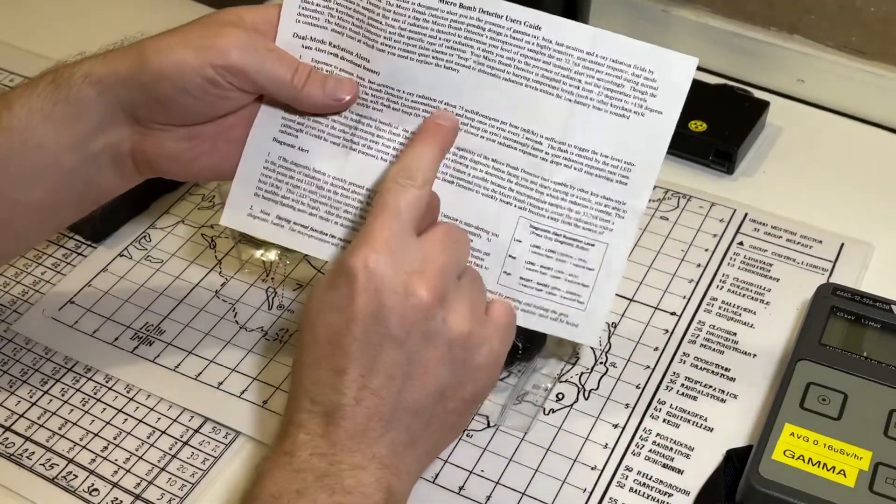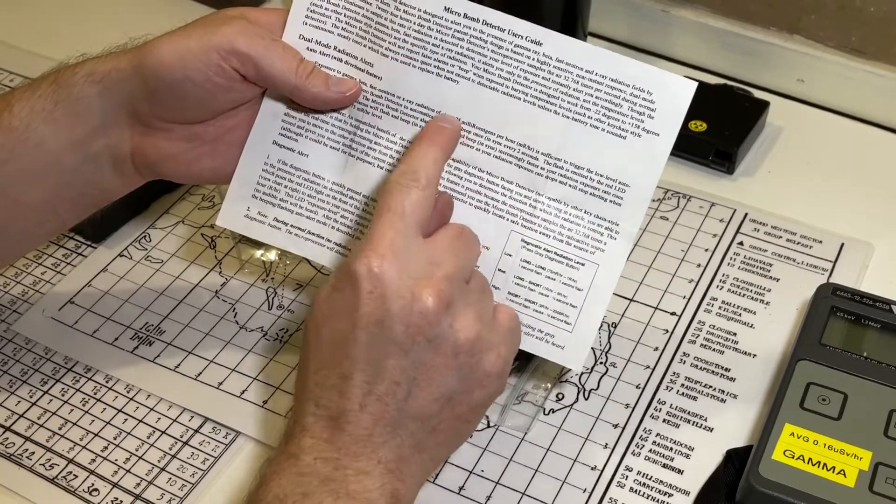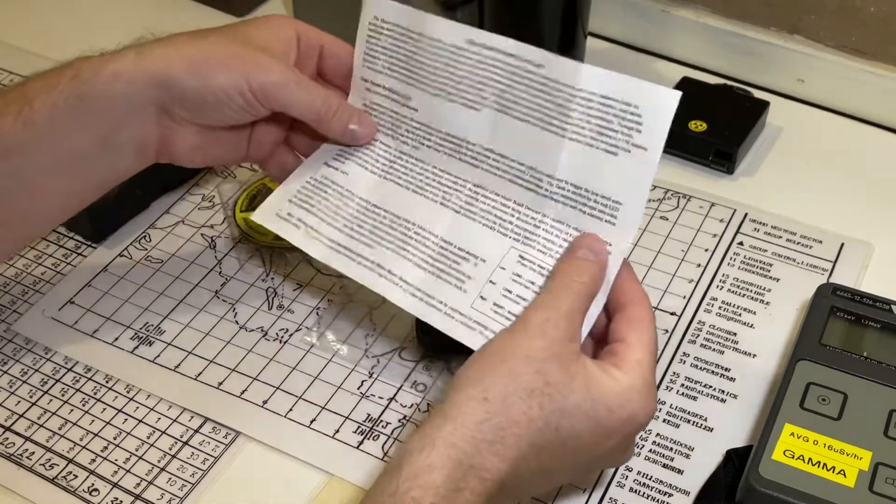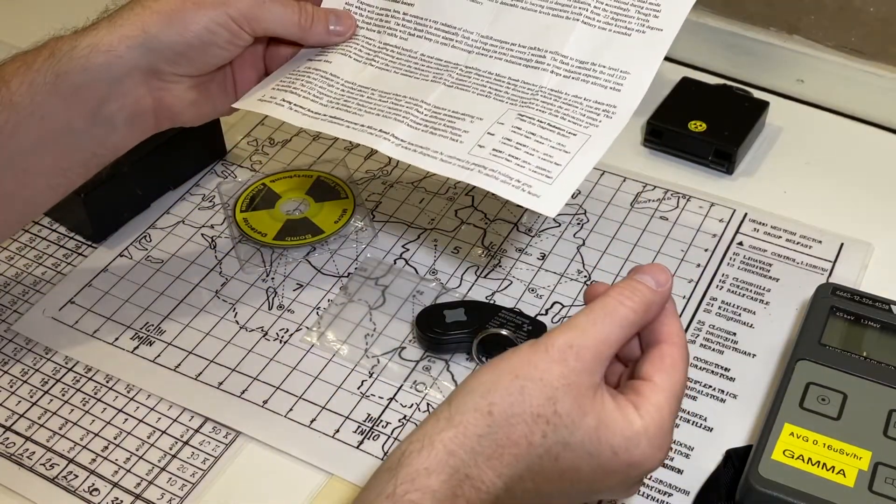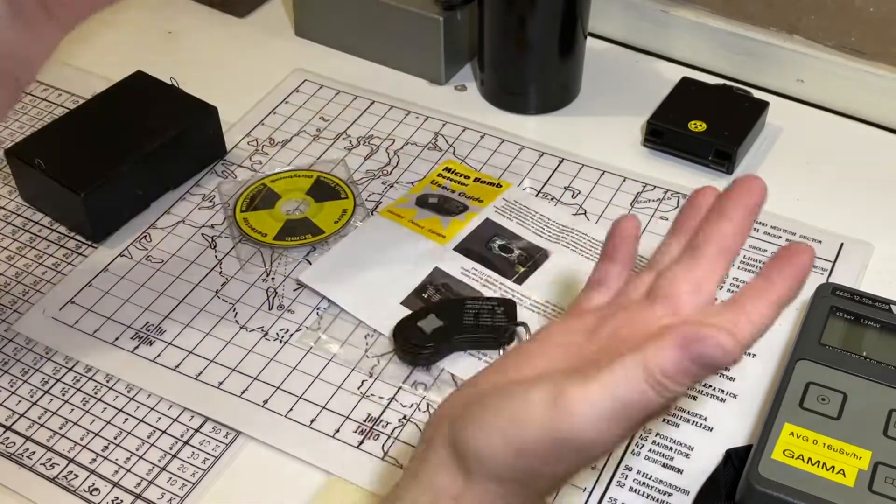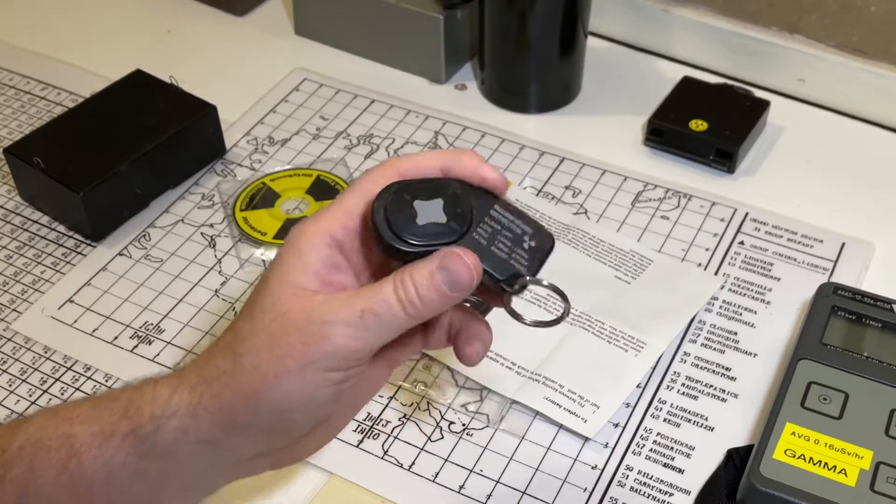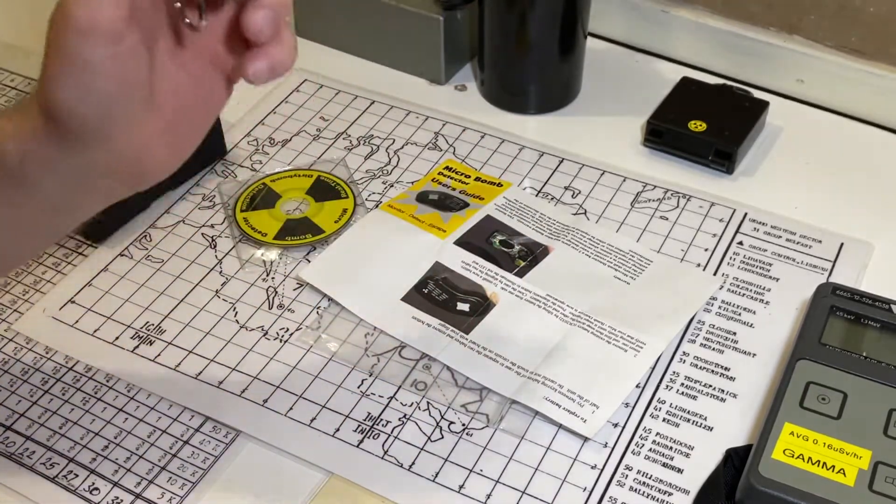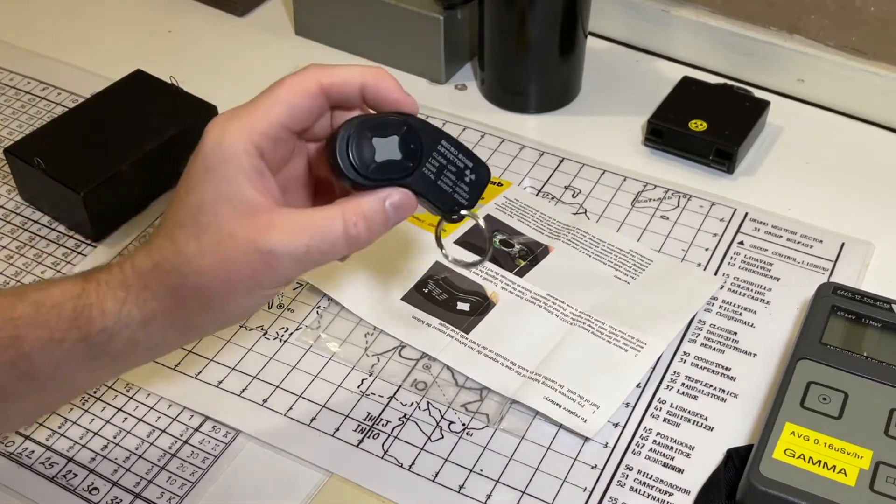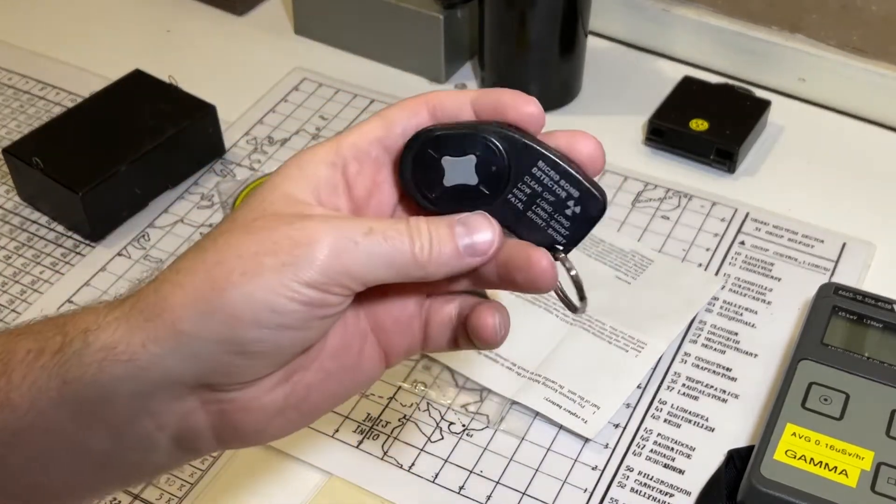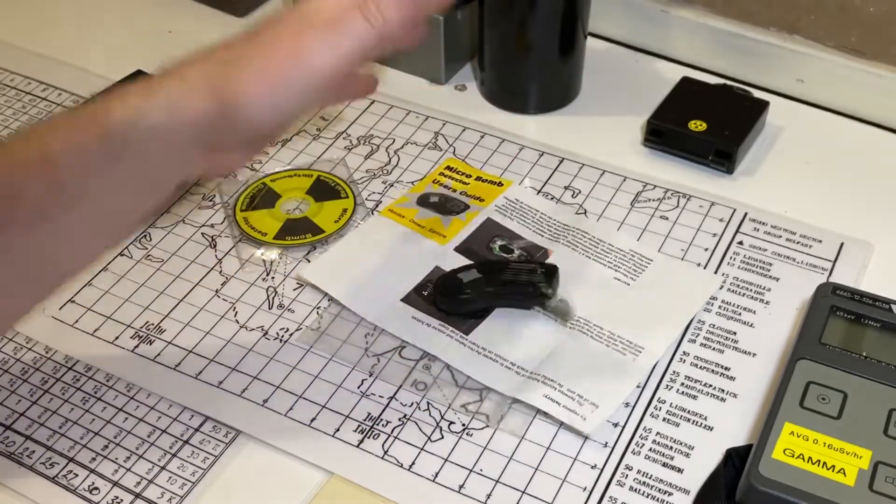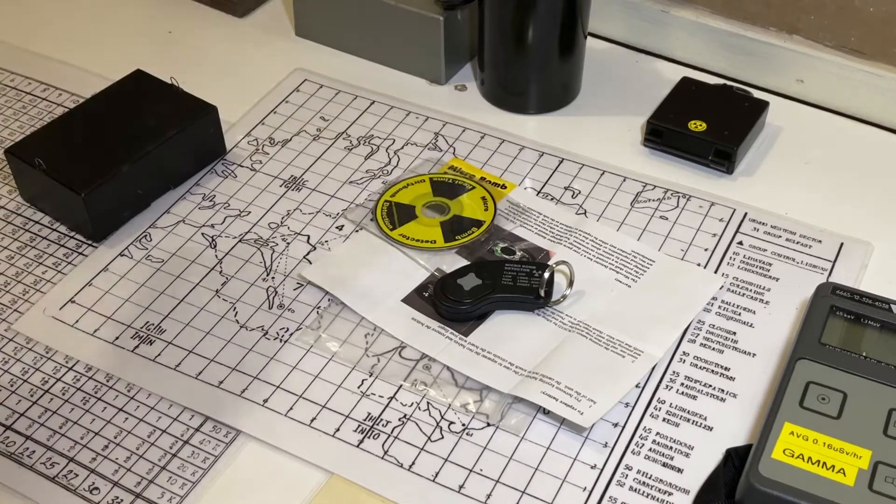The smallest amount it'll detect is 75 milliRonkin, which is 750 microsieverts in gamma. I don't have anything that would register that, thank God, because that's a hell of a lot. So really this is totally useless unless there is a nuclear war. As a novelty item maybe, but for £30 I totally overpaid.